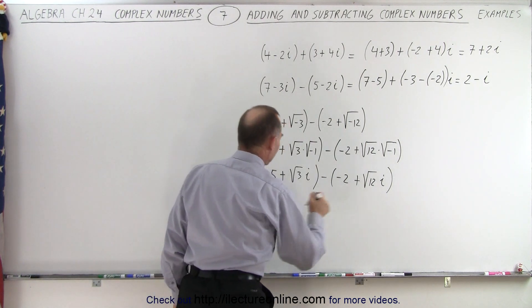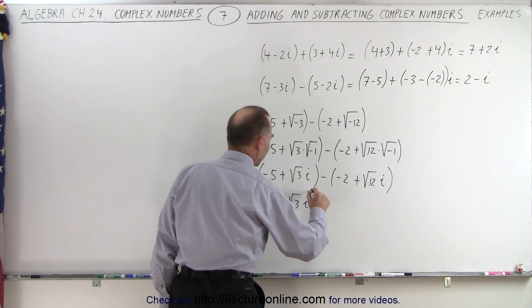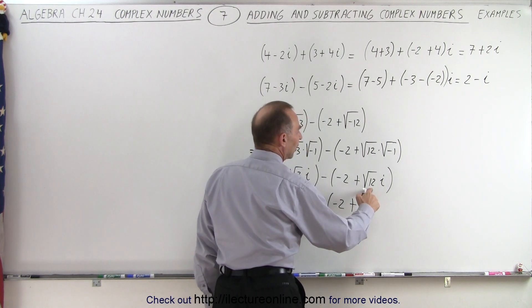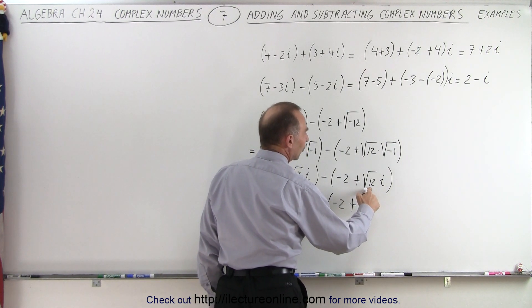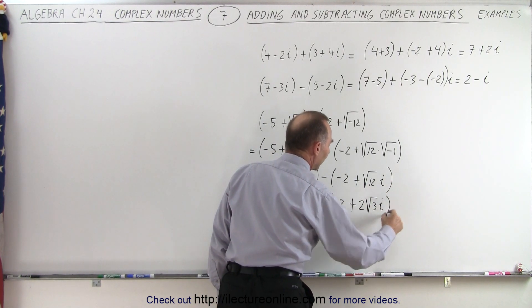Let's go ahead and simplify this. So this is equal to negative 5 plus the square root of 3 times i minus a negative 2 plus 12, that's 4 times 3 and the square root of 4 is 2. So that would be 2 times the square root of the 3 times i.